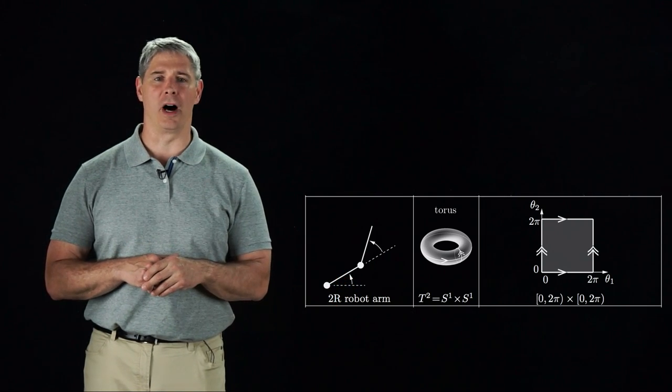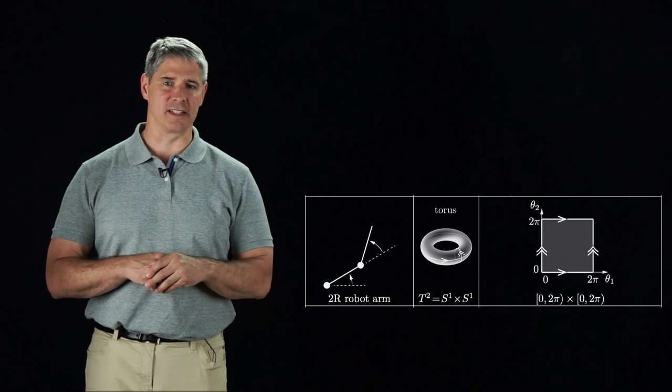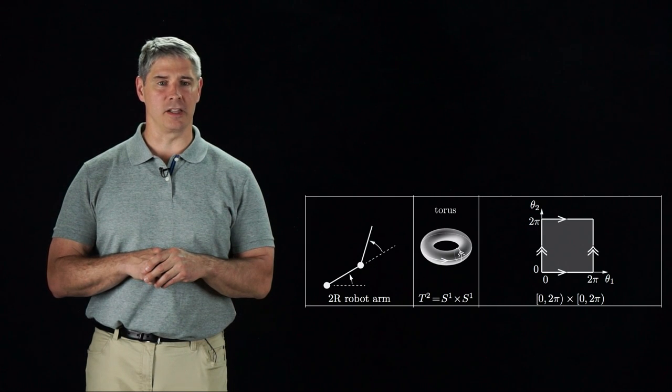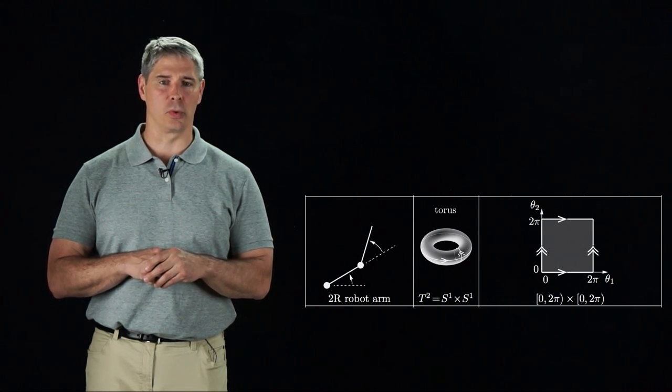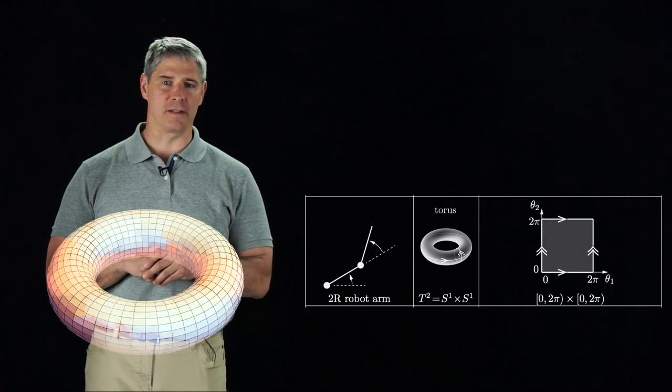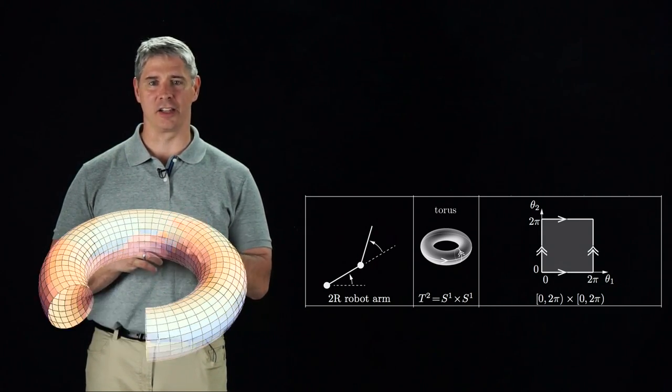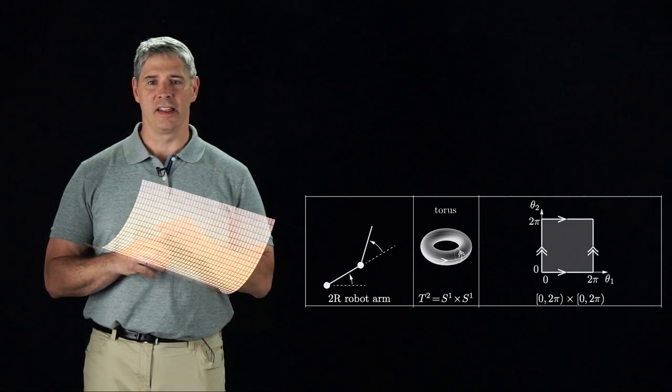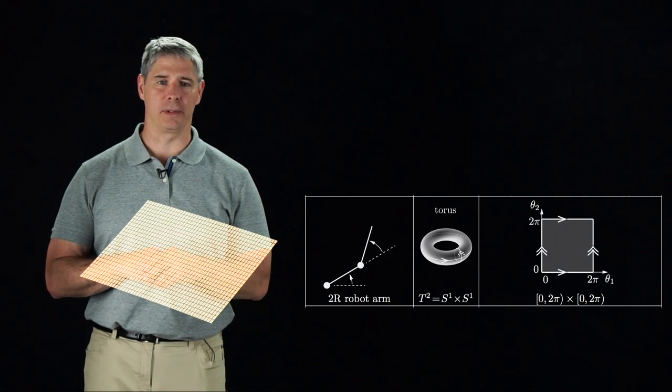Let's focus on the 2R robot. The topology of the C-space is a torus. We can represent the torus using two joint angle coordinates, ranging between zero and two pi. The space of coordinates is obtained from the torus by cutting the torus once to get a cylinder, then again to get a square subset of the plane.